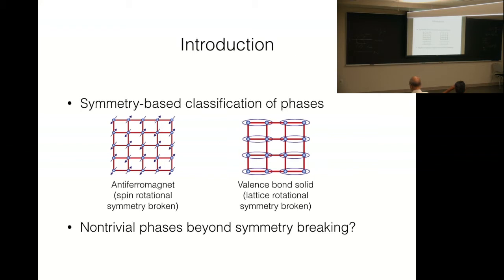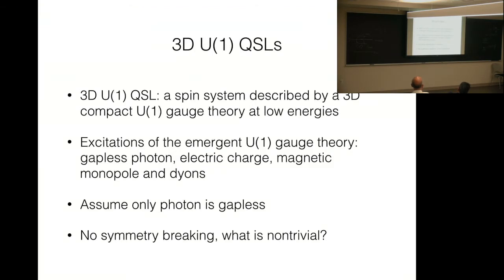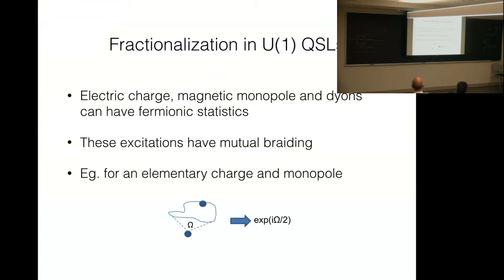And the most prominent examples are fractional quantum Hall states. But today, I'm talking about another class of examples that are quantum spin liquids. In the morning, we already had one talk about it. But I'm talking about a particular type of quantum spin liquid, 3D U(1) quantum spin liquid. This is a spin system described by a 3D compactified U(1) gauge theory at low energies. Excitations of this emergent U(1) gauge theory would have gapped electric charges, like electric monopoles, and dyons, which are bound states of both certain charges and monopoles. In this talk, I will assume only quantum spin liquids and all other excitations are gapped. And this state is not associated with any symmetry-breaking. So, what's non-trivial about it? It's non-trivial because of fractionalization in the system.